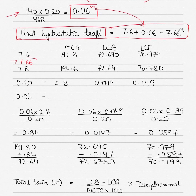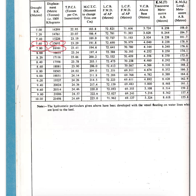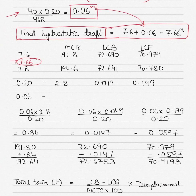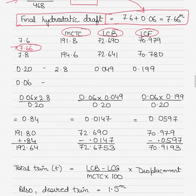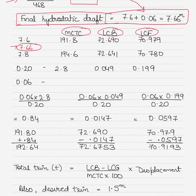Using the hydrostatic draft of 7.66 meters, go back to the hydrostatic tables. Since 7.66 lies between 7.6 and 7.8, note down the values of MCTC (moment to change trim by one centimeter), LCB (longitudinal center of buoyancy forward of aft perpendicular), and LCF (longitudinal center of flotation) for both 7.6 and 7.8. Then go back into the calculations with those values.